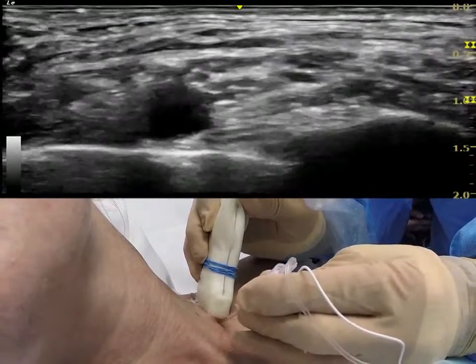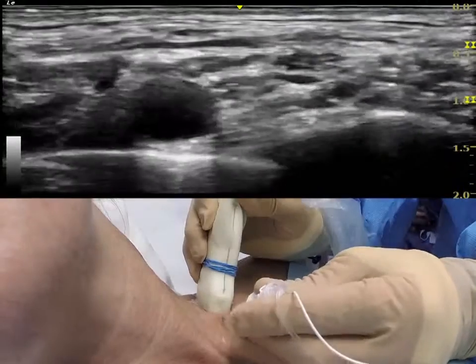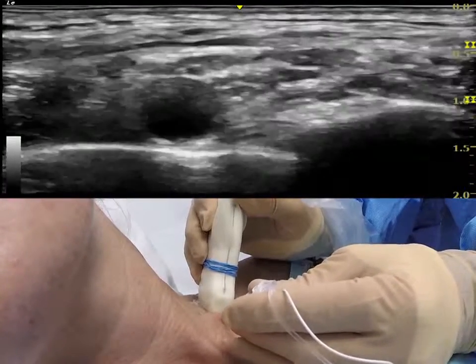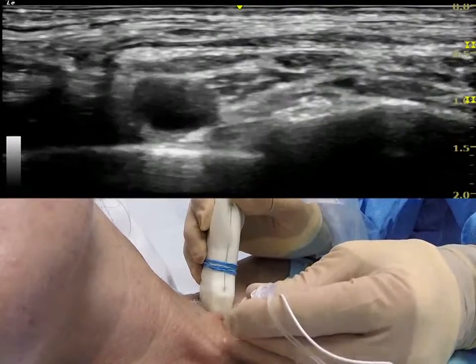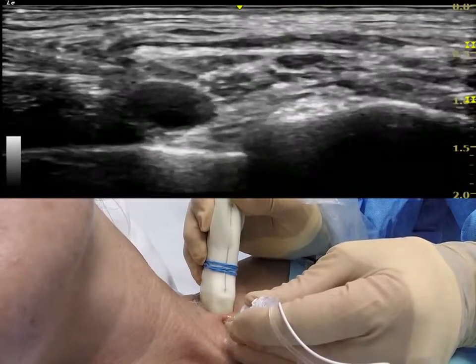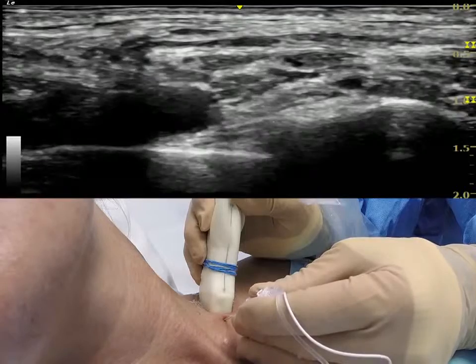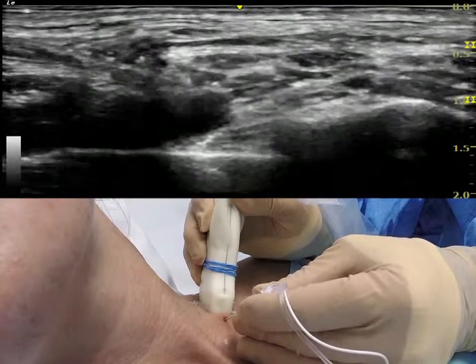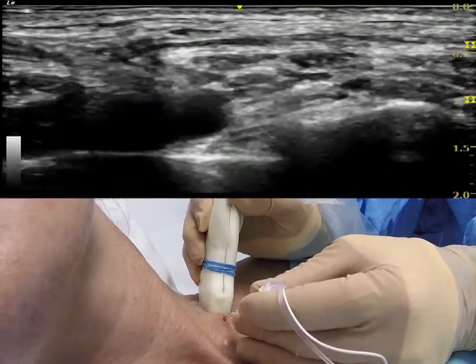In the ultrasound image you can clearly see the subclavian artery sitting on the first rib, with the pleura visible below. Note the shallow depth. The needle is approaching from the left of the image across the top of the artery into the brachial plexus sheath.